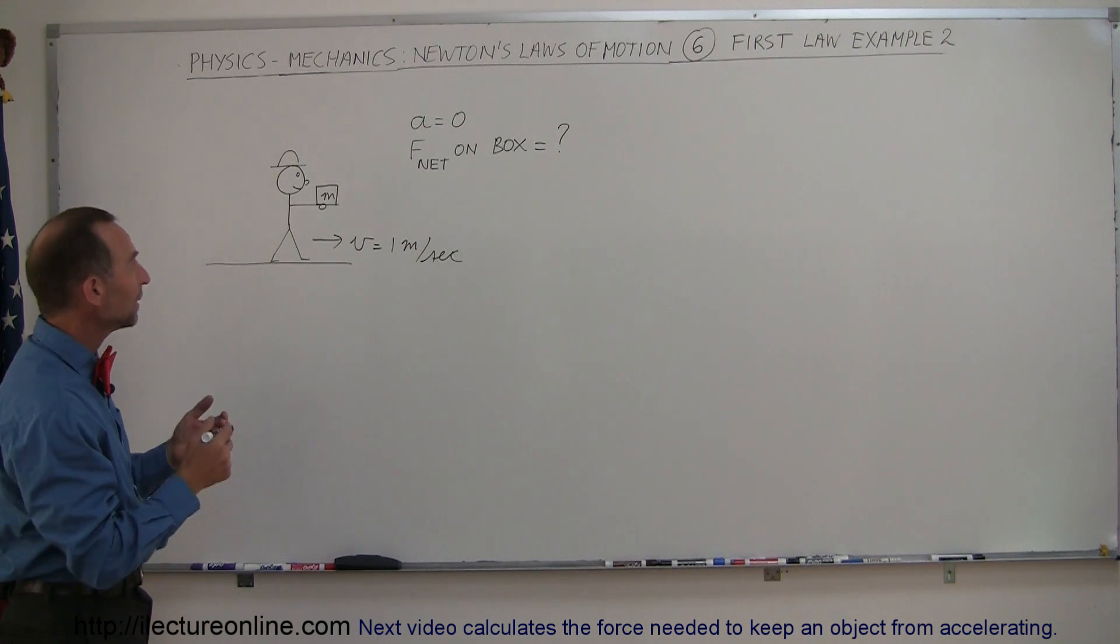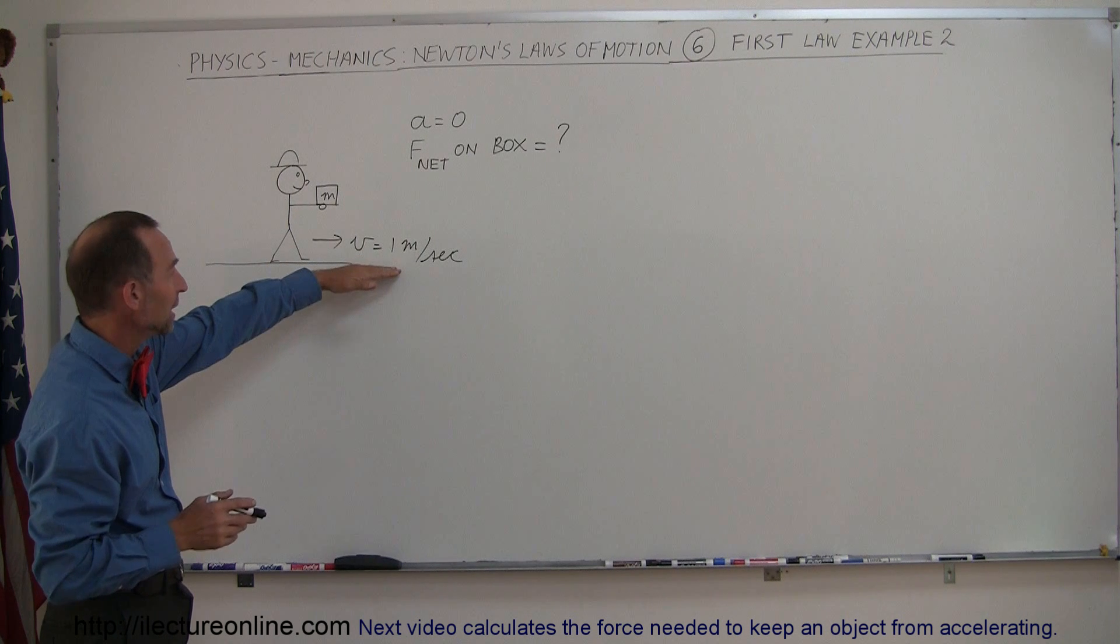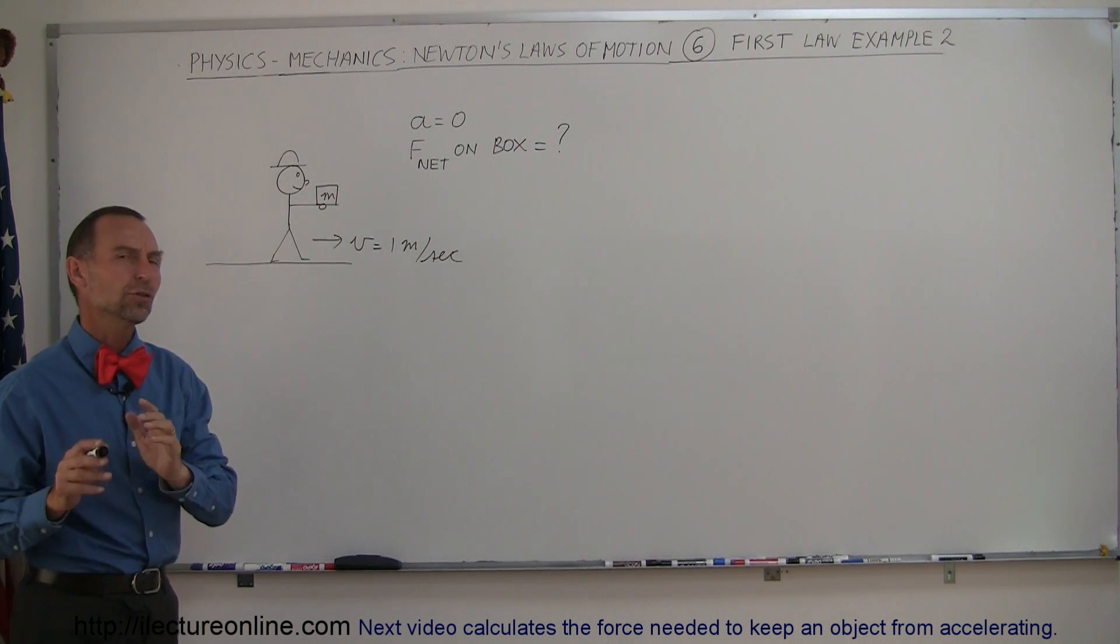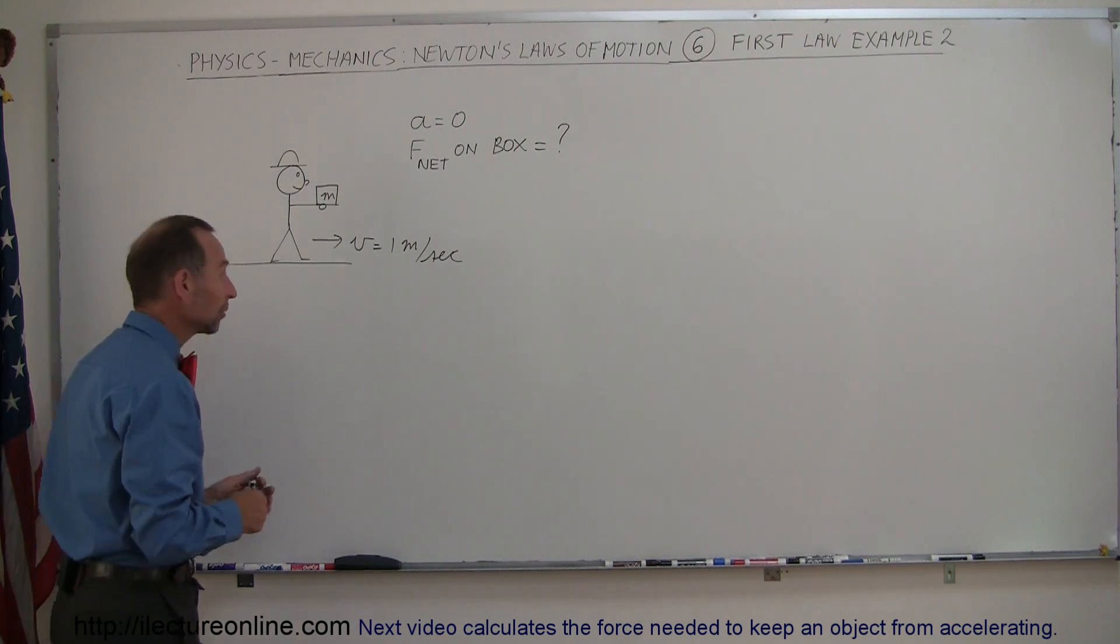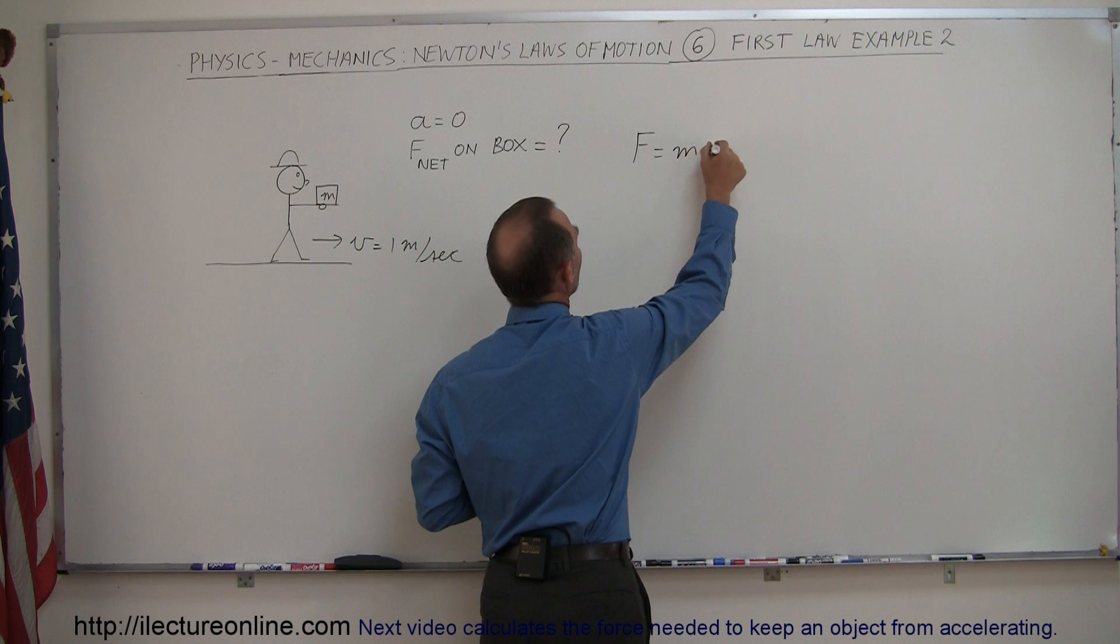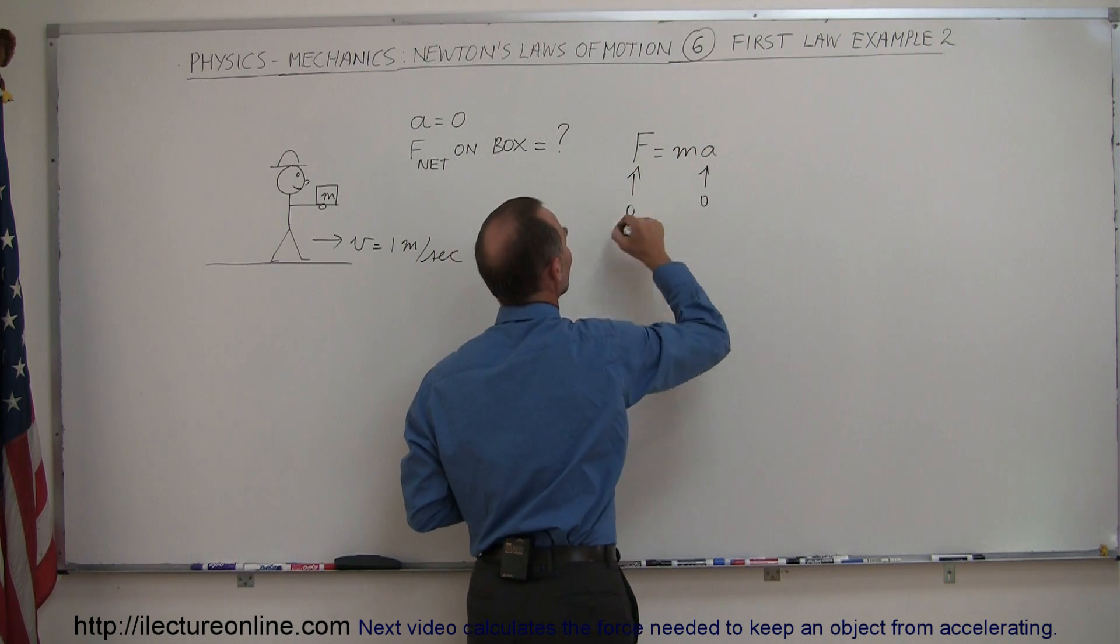The question would be, what is the net force on the box? Realizing since he's moving at a constant speed of one meter per second, there's no acceleration. Using Newton's second law, F equals MA. Let's write that down. F equals MA, and if A is zero, then F has to be zero.